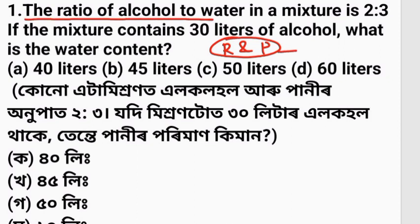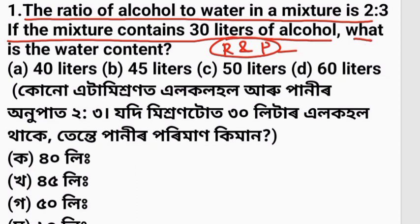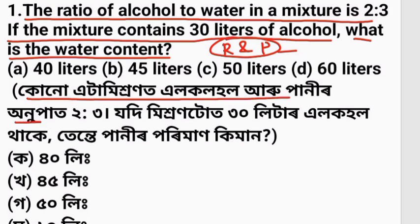The ratio of alcohol to water in a mixer is 2 to 3. If the mixer contains 30 litres of alcohol, what is the water content? The ratio of alcohol in a mixer is 2 to 3.